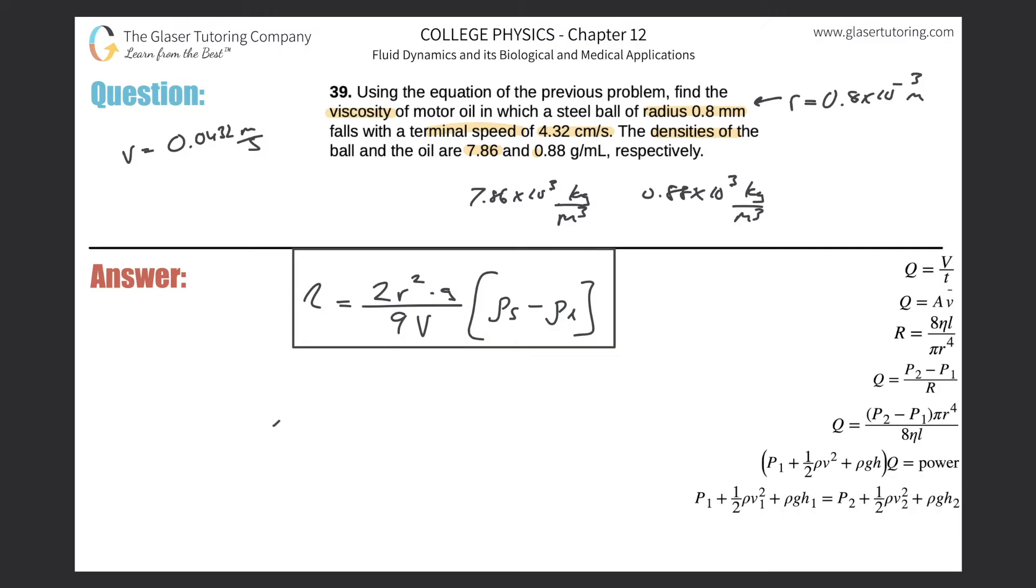Now we can plug everything in. So the viscosity here is going to be equal to 2 multiplied by the radius in meters. So that's going to be 0.8 times 10 to the minus 3. And that whole thing is squared, multiplied by 9.8.